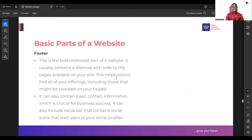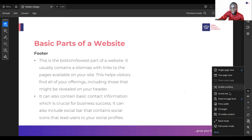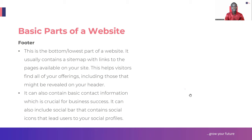The footer can also contain basic contact information, which is crucial for your business success. It can also include your social bar - social icons that can lead people to your pages on social media platforms. It also contains your copyright information. You want to ensure you have the right copyright information on your website to prevent issues - if you don't have copyright information and people copy your content, you don't have any reason to sue them.